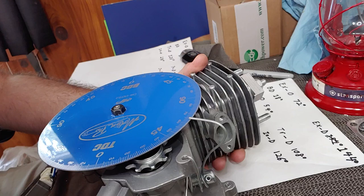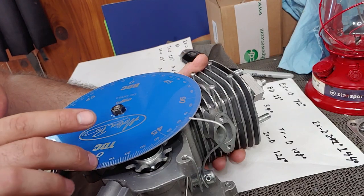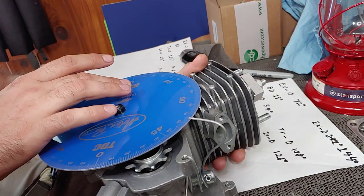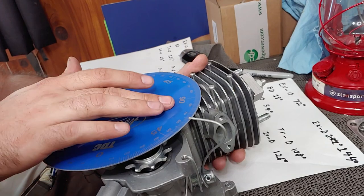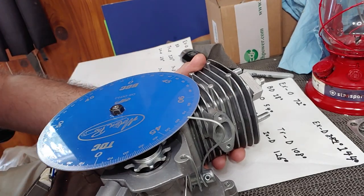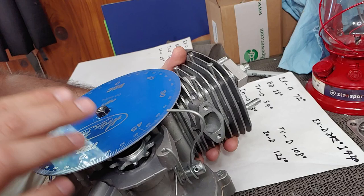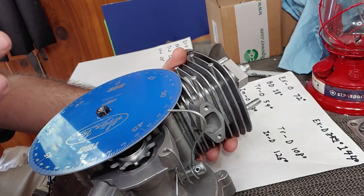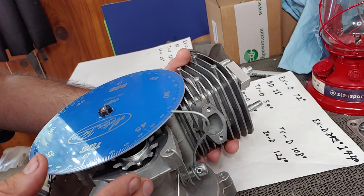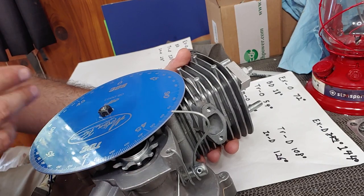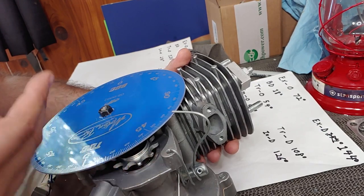Where I got confused is I had seen some degree wheels that had also gone all the way to 180 and this one's in the increments up to 90. So what I'm going to do here is I'm just going to read the number off of the degree wheel for each of the port openings and then times that by two to get the duration.